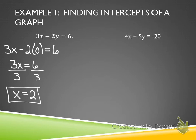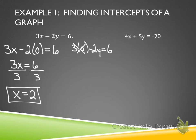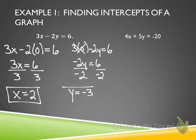Now I'll take the same equation and solve for y, so I substitute zero for x. Three times zero minus 2y equals six — the x-term cancels. I'm left with -2y = 6. Divide both sides by negative two, and y equals negative three. So I've found my x and y-intercepts.